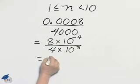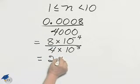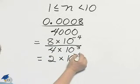Simplifying, 4 divides into 8. 2 times 10 to the negative 4.